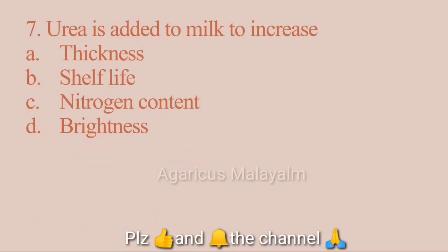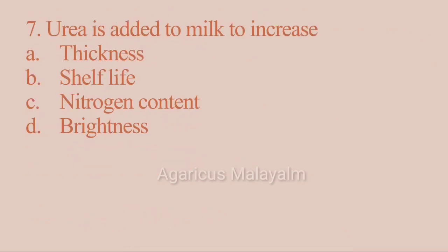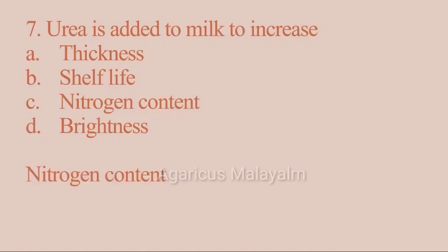Seventh question: urea is added to milk to increase what? Option A: thickness. Option B: shelf life. Option C: nitrogen content. Option D: brightness. Correct answer: Option C — nitrogen content.